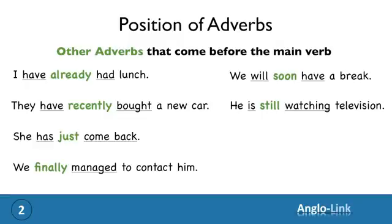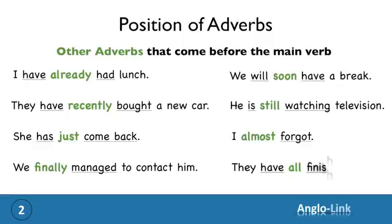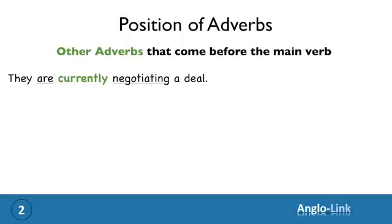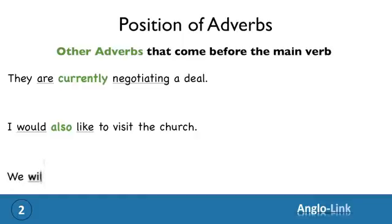'He is still watching television.' 'Almost' — 'I almost forgot.' 'All' — 'They have all finished.' 'Currently' — 'They are currently negotiating a deal.' 'Also' — 'I would also like to visit the church.' 'Probably' — 'We will probably get a letter next week.'